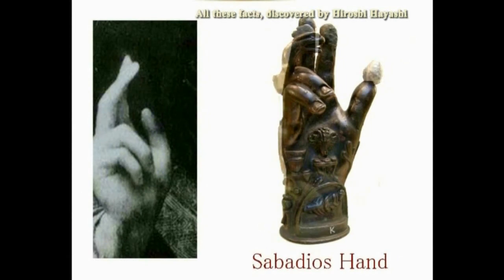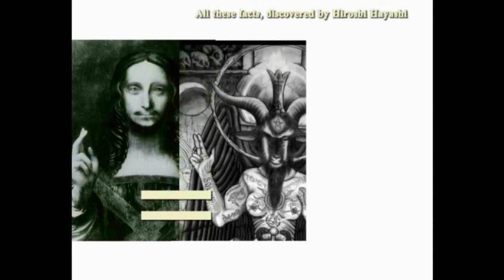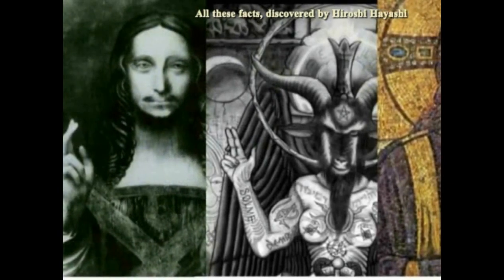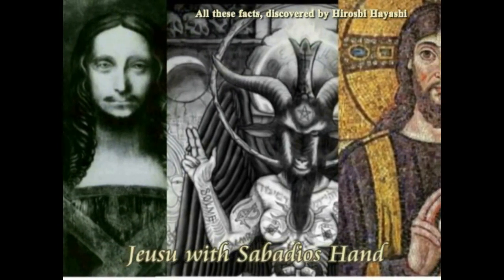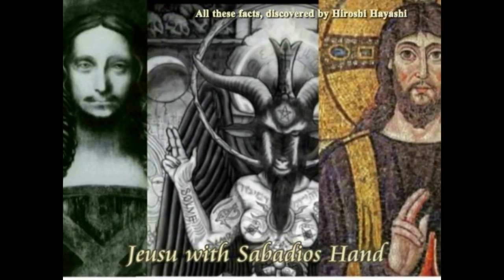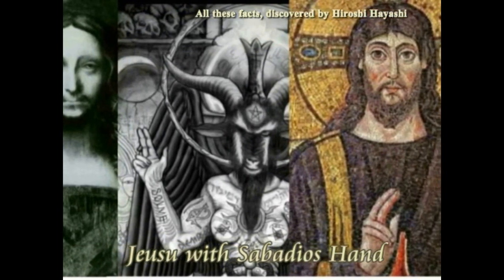そのバフォメットはサバジオスの手をしています。つまり、イエスのハンドサインとも一致します。こうして四方八方から、バフォメットにつながっていくのはイエス自身だということになります。つまり、バフォメットはイエス自身だということになります。イエスが自らこのような姿で表し、私たち人間に教えているのです。神を見かけで選んではいけない、とです。それが、イエスからのメッセージということになります。これで、バフォメットの正体が皆さんにも分かっていただけたと思います。どうか、ご覧になってください。